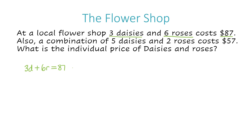Now I'm going to do the same format but with the second sentence. It says also a combination of five daisies, so I write five D, and two roses — plus two R — costs $57, so that equals 57.